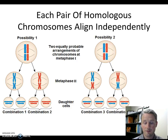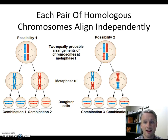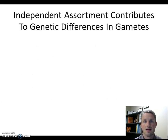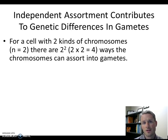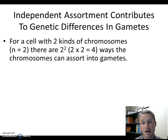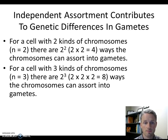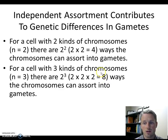Independent assortment is happening for every single chromosome in the cell. For a cell with just two kinds of chromosomes, there are 2 to the 2nd power — four — ways to align them. If we add one more chromosome, there are 2 to the 3rd power — eight — different combinations we can make. This grows exponentially, so we get to big numbers really fast.